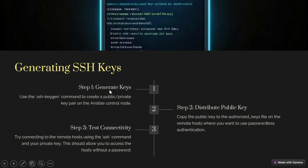Step 1: Use the ssh-keygen command. Whenever we run the ssh-keygen command, it will create a public and private key pair. We can run this manually using that command or in a single playbook. Use the ssh-keygen command to create a public and private key pair on the Ansible controller.